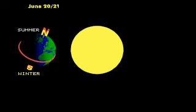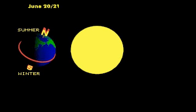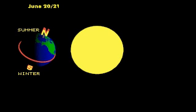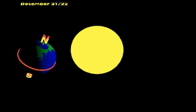When the North Pole is tilted directly toward the Sun, the Northern Hemisphere receives the most sunshine and summer begins. The Southern Hemisphere is tilted away from the Sun, and so it receives less sunshine and winter begins.